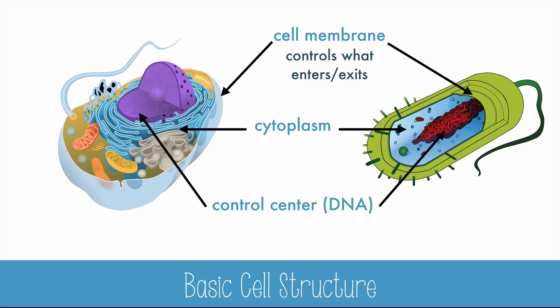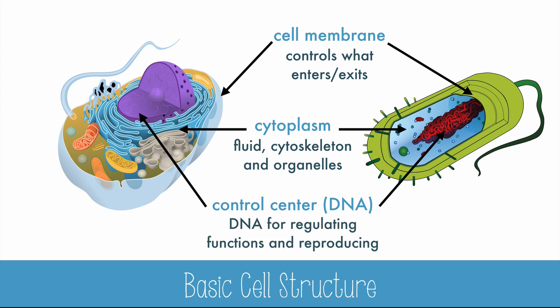The cell membrane controls what enters and exits the cell. The cytoplasm is a fluid with cytoskeleton, and in eukaryotes it also has organelles. The control center includes DNA for regulating functions and reproducing. In eukaryotes, the DNA is kept in the dense nucleus, but in prokaryotes, it's loosely coiled around the center.